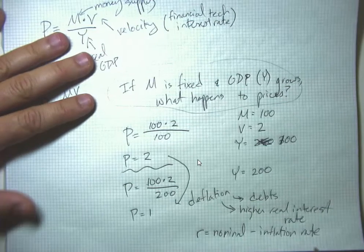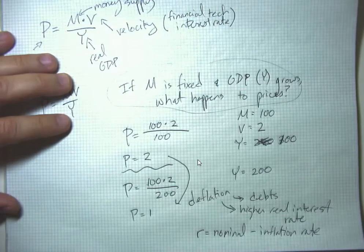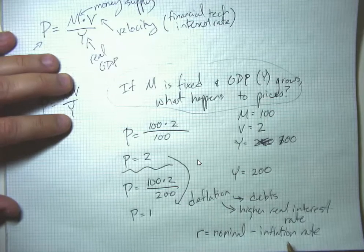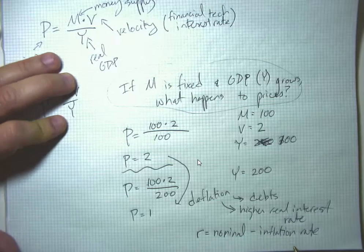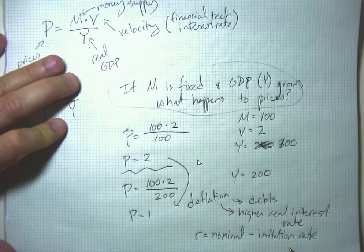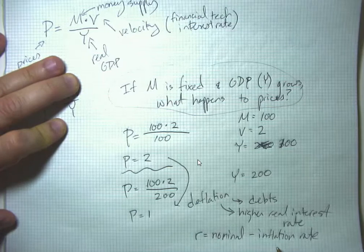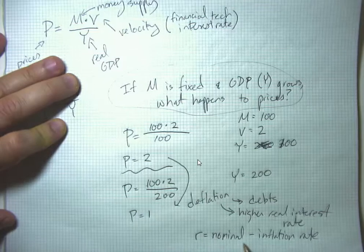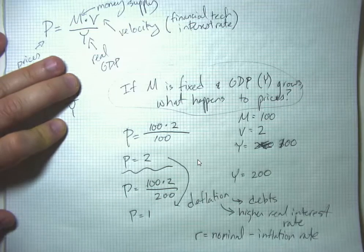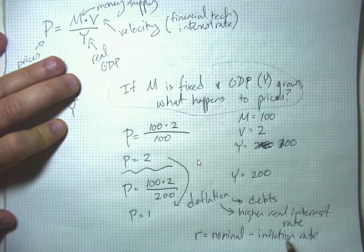This was actually a big problem for farmers during the late 1800s in the United States. They would borrow money to buy or expand their farm, and every year crop prices got lower and lower. So the amount of crop they had to sell to service their loans went up each year. There was this big free silver movement and William Jennings Bryan and this political struggle over the money supply and whether it should be expanded at that time.